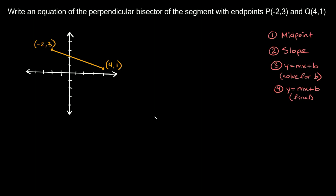In this video I'm going to teach you how to write equations for perpendicular bisectors. This problem says: write an equation of the perpendicular bisector of the segment with endpoints P and Q. I already graphed P and Q right here.